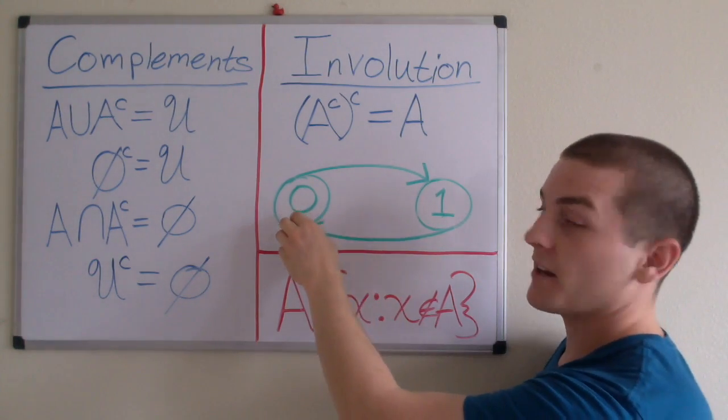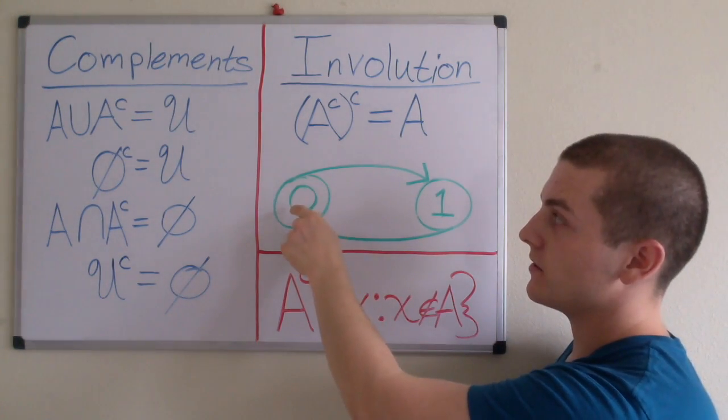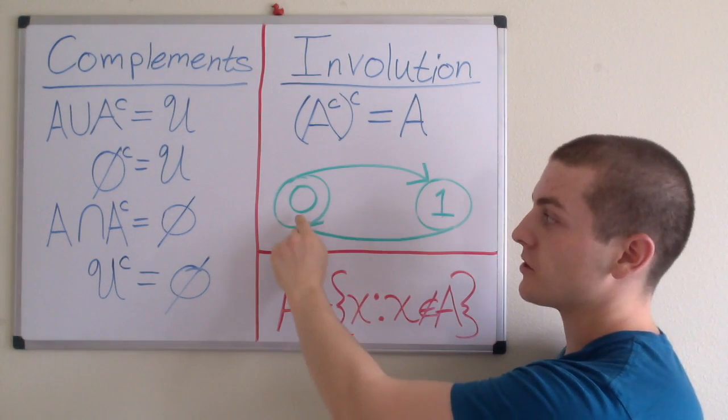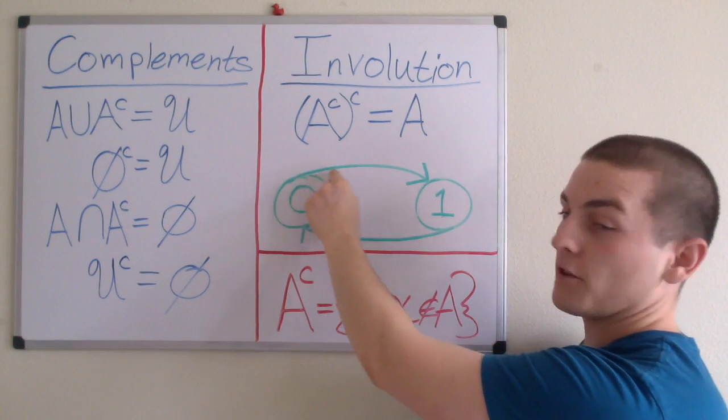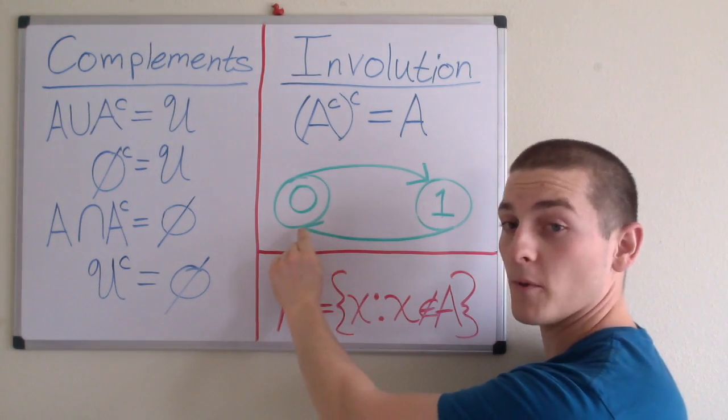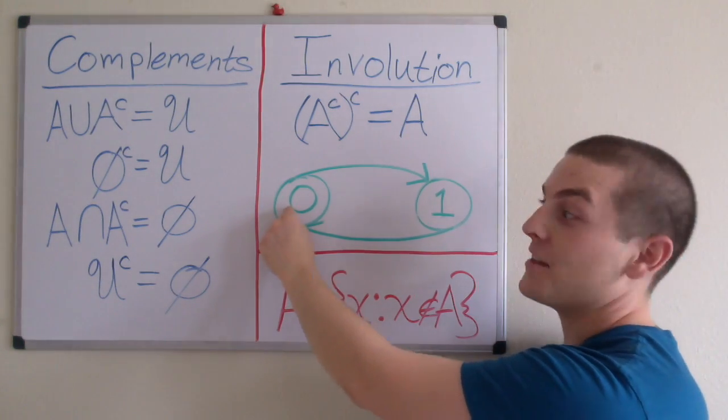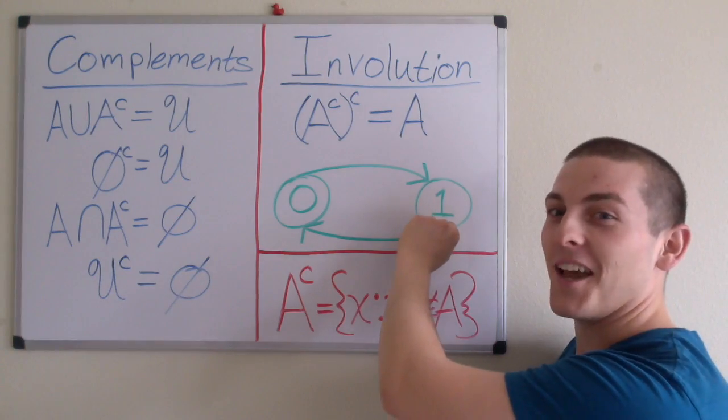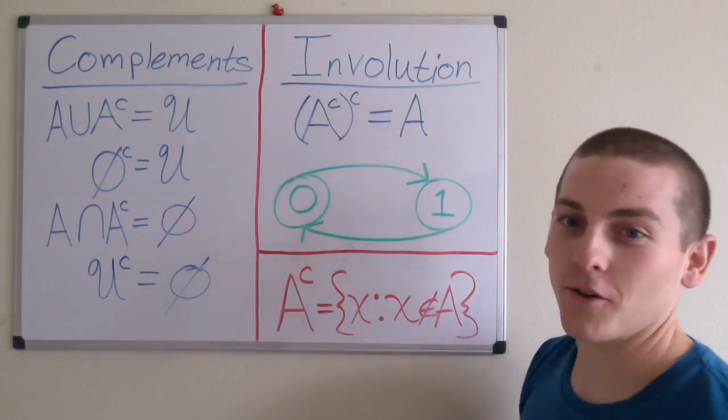In this case, if we fed set A through this cyclical function here, then we would have A feed it through complement, we get A complement. Feed it back through the function, we get A complement complement, which equals A. And then we can have A complement complement complement, which would be A complement, and then you get the idea. It's cyclical.